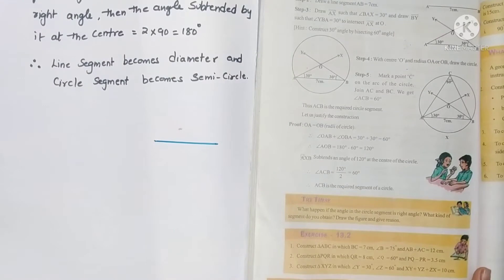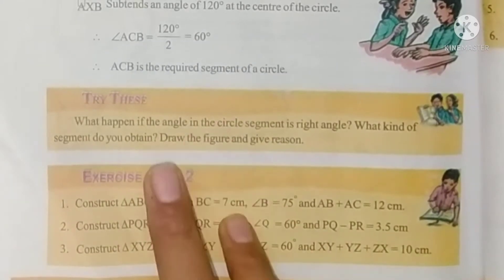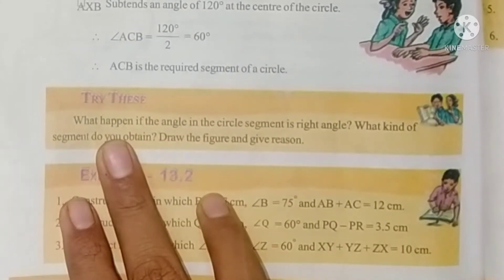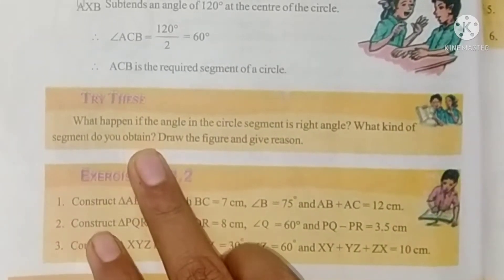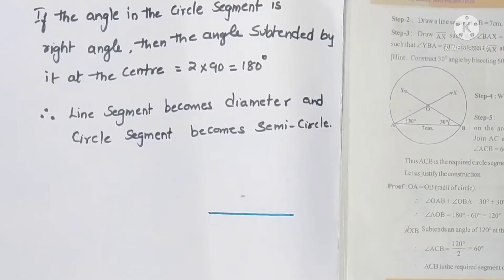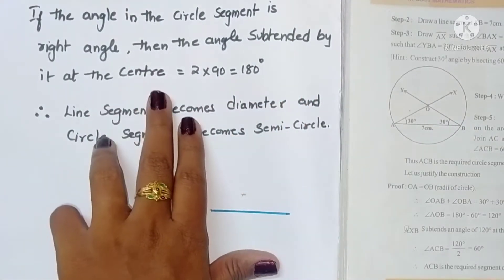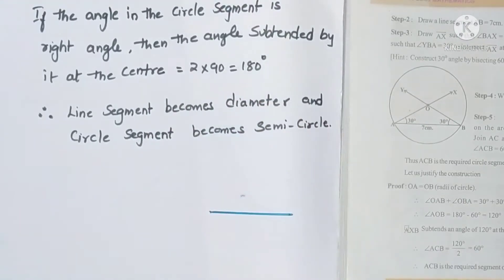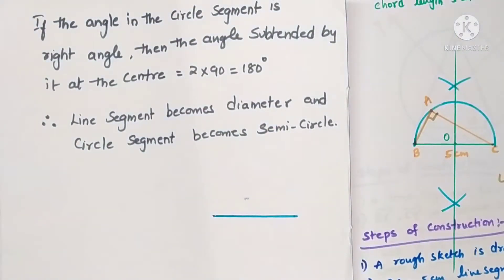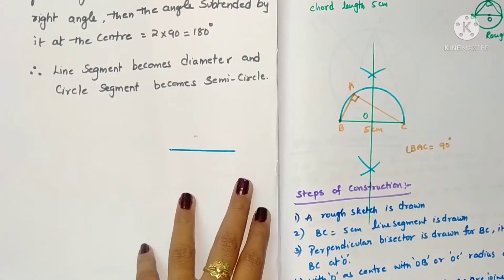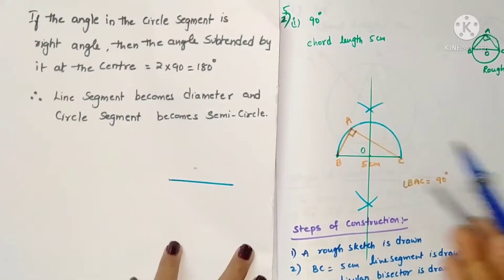Hello students, welcome to my channel. Today in this video we are going to see page number 290, Try This problem and the fifth problem in this exercise. Try This: what happens if the angle in the circle segment is a right angle? What kind of segment do you obtain? If the angle in the circle segment is 90°, the angle subtended at the center is 2 × 90 = 180 degrees. So the line segment becomes a diameter and the circle segment becomes a semicircle.